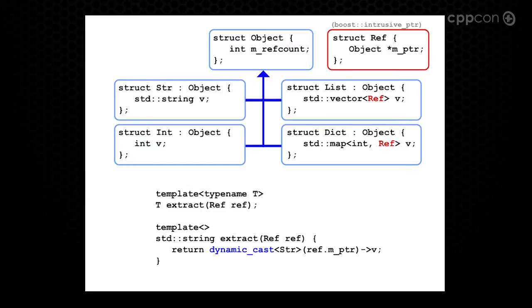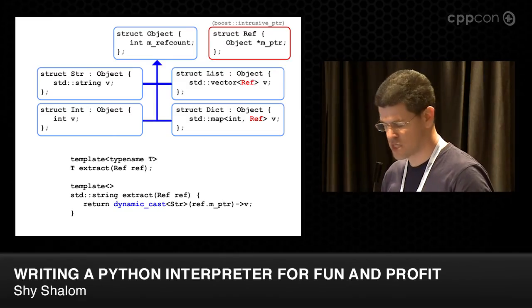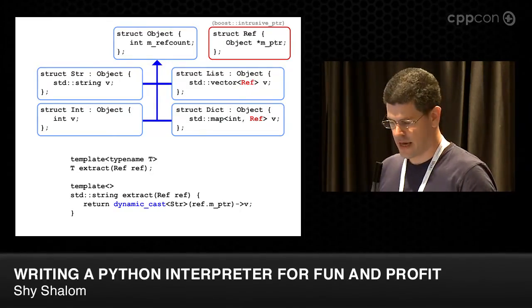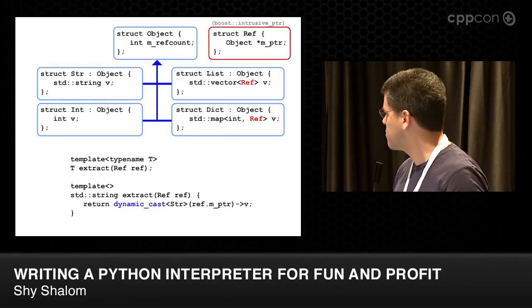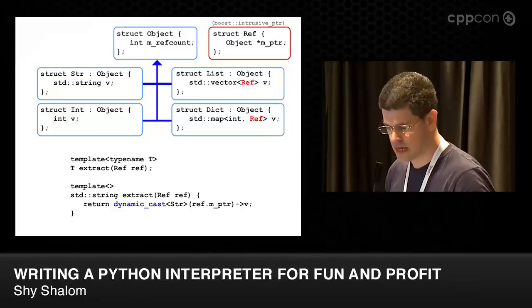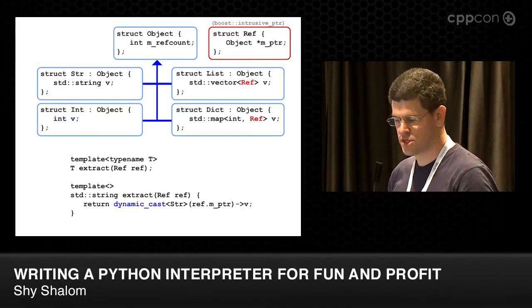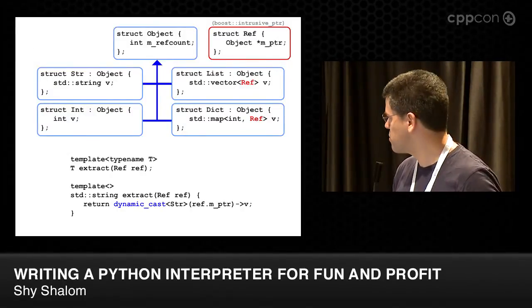Next thing we need to do is implement the object models. We have an object base class and we have a string int list and dictionary objects. Each is implemented by the corresponding C++ types. And we also have a ref class that's used as a reference wherever reference is needed. It's basically a boost intrusive PTR which manages the ref count in the object class.